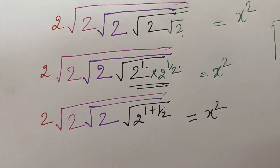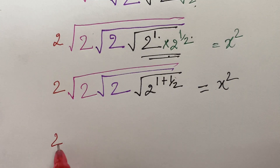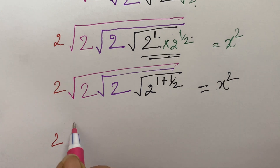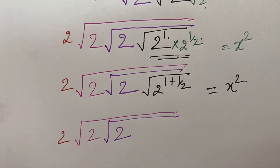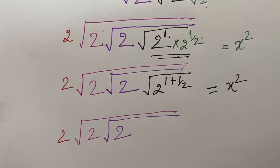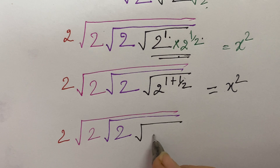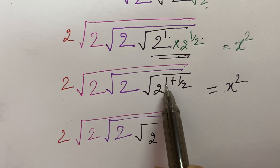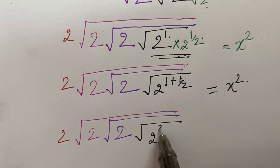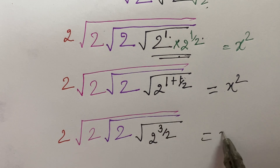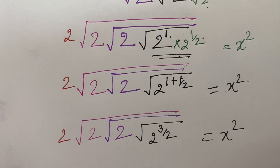So you will go for cross multiplication. You will get 2 into square root of 2, square root of 2. So root of 2 raised to the power — 2 ones are 2, plus 1 is 3 — 3 upon 2 is equal to x square.